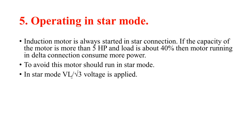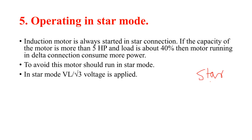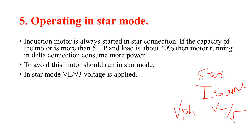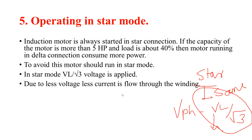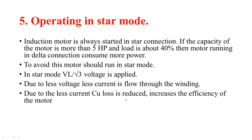In star mode, voltage divided by root 3 is applied. Due to less voltage, less current flows through the winding. Due to less current, copper losses are reduced. The copper losses depend on I²R losses — current is reduced, so I²R losses are reduced.